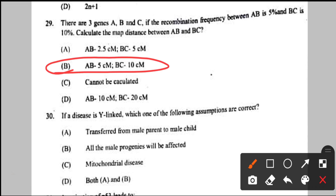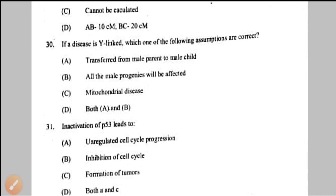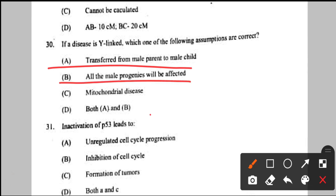Question number 30: if a disease is Y-linked, which assumption is correct? The Y chromosome is present only in males, and Y goes only to male offspring. So any affected individual will be male, and transfer happens from male parent to male child only. Both options A and B are correct — so option B is the answer.